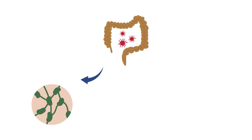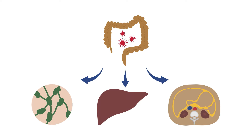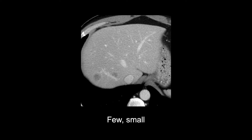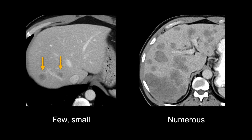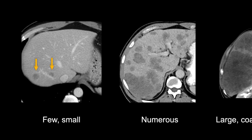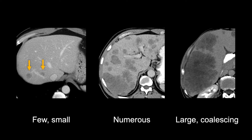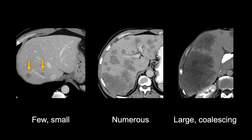Colonic adenocarcinoma has the same common routes of metastatic spread as gastric cancer: regional lymph nodes, the liver, and the peritoneum. Metastatic disease in the liver may range from a few relatively small masses to numerous masses throughout the liver, to large coalescing masses replacing much of the liver tissue.